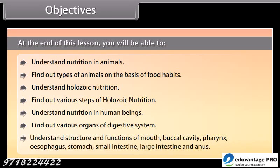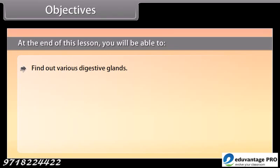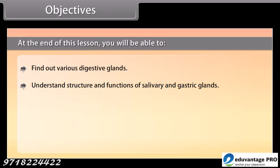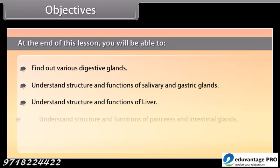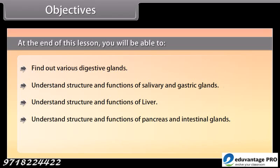You will also understand the structure and functions of the mouth, buccal cavity, pharynx, esophagus, stomach, small intestine, large intestine, and anus. Additionally, you will find out various digestive glands and understand the structure and functions of salivary glands, gastric glands, liver, pancreas, and intestinal glands, and study the chemistry of digestive glands.